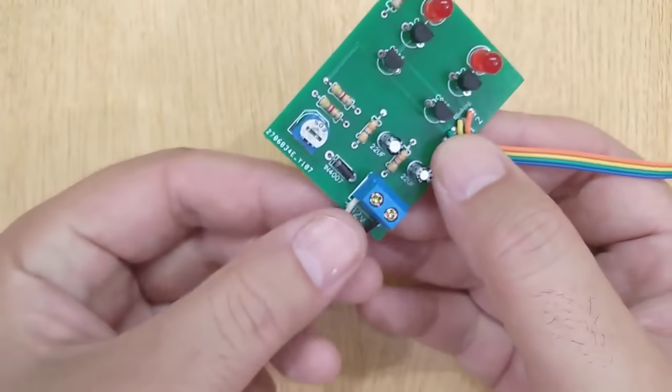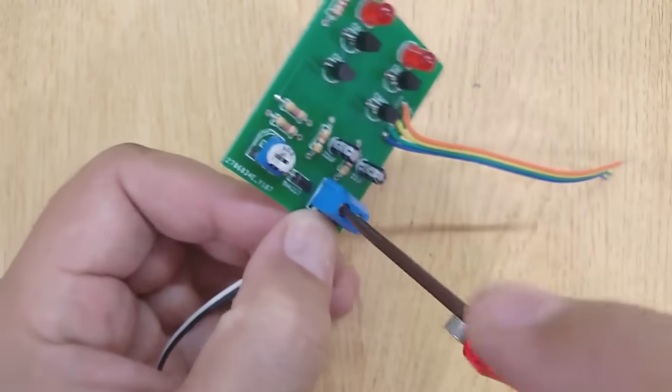Insert two wires with the indicator clips into the screw terminal and tighten the screws.